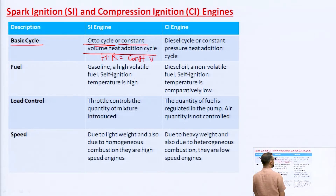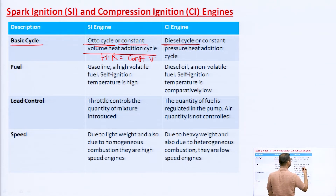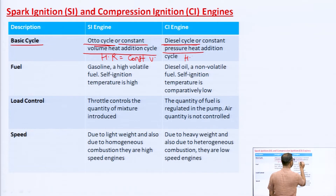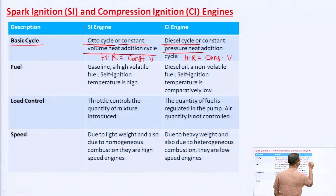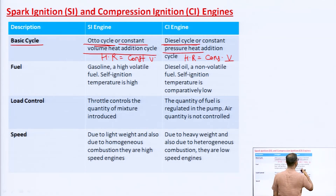In the case of the SI engine, it is constant volume. In the case of the CI engine, the cycle is called the Diesel cycle. In the Diesel cycle, heat addition is at constant pressure. In the case of the Otto cycle, heat addition and heat rejection are both at constant volume. In the case of the CI engine, heat addition is at constant pressure, but heat rejection is at constant volume.